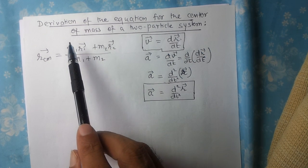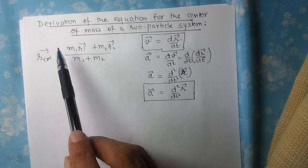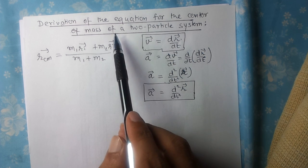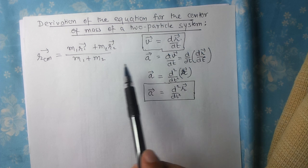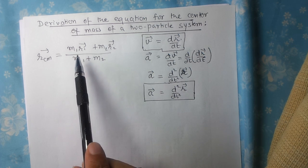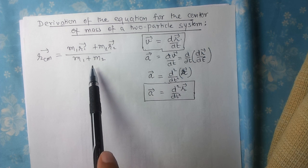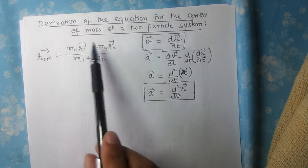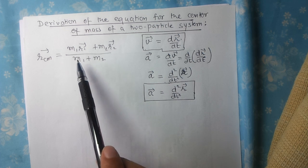In this video, we are going to look at the derivation for the equation of the center of mass of a two-particle system. The equation that we are going to derive is RCM equals M1R1 plus M2R2 upon M1 plus M2. We looked at this equation in the previous video, so we are going to derive this.